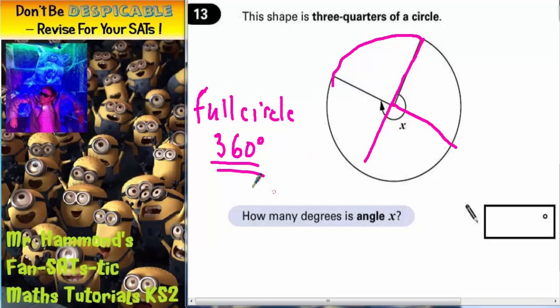Well, to find a quarter of 360, you need to half it and then half it again. So a half of 360 would be 180. Half it again would be 90. So each quarter would need to have 90 degrees in there.